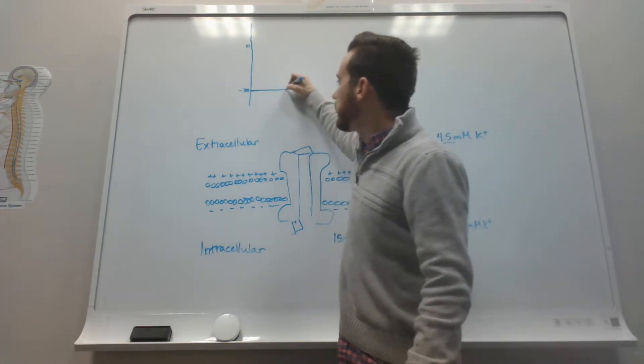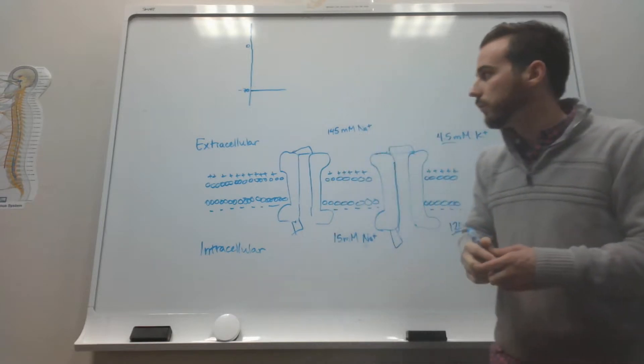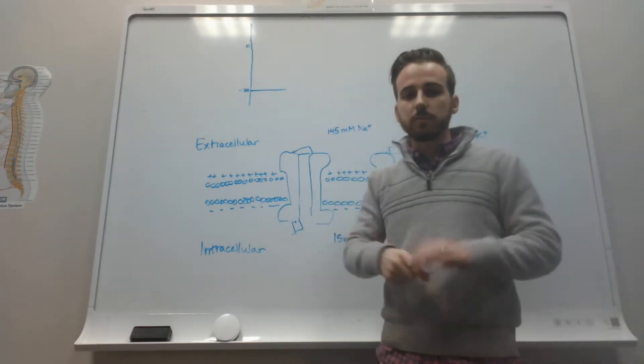Now, in other cells, that can be different, but in neurons, it's about negative 70 millivolts. That's called the resting membrane potential.